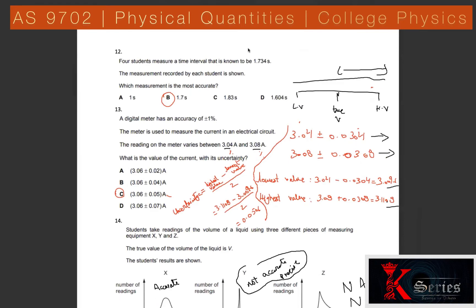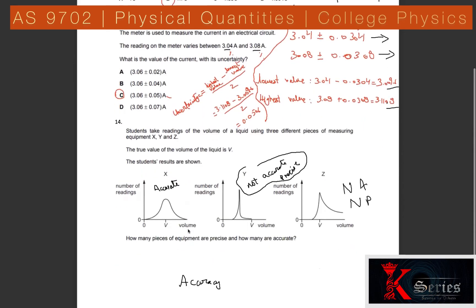Question 12: The true time interval is 1.734 s. We need the measurement that is accurate enough. Rounding 1.734 to one decimal place gives 1.7. Option giving 1.7 is correct because 1.734 rounds to 1.7 (since the digit after is 3, which is less than 5). The answer is 1.7 s.